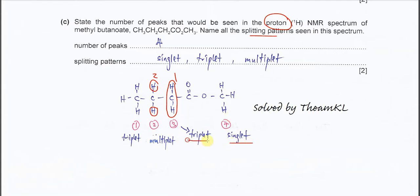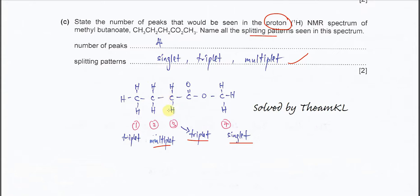So the splitting patterns seen are: singlet, triplets, and multiplet. The number of peaks is four — four different proton environments, or four different proton chemical environments.